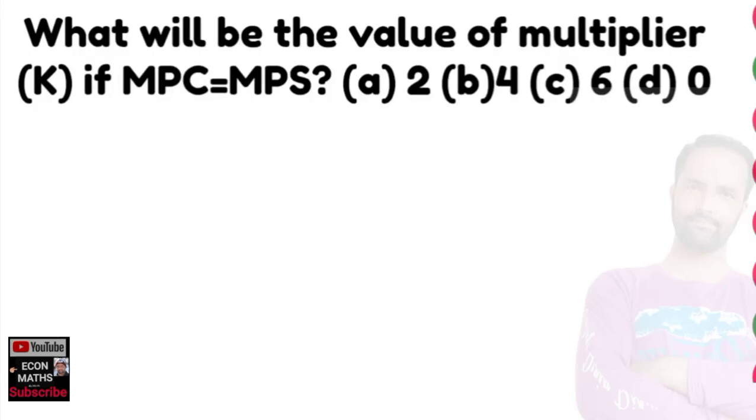In this video we will solve a problem on multiplier. The question is what will be the value of multiplier if marginal propensity to consume is equal to marginal propensity to save? The options are 2, 4, 6, or 0.